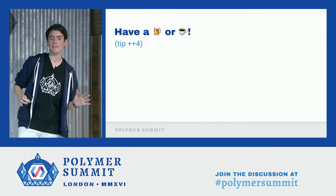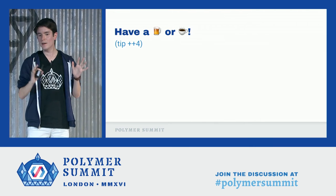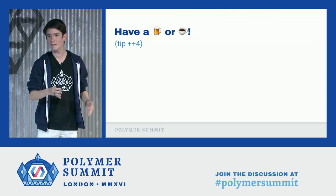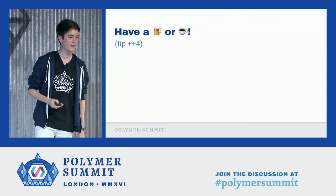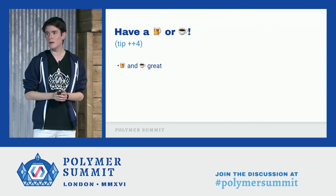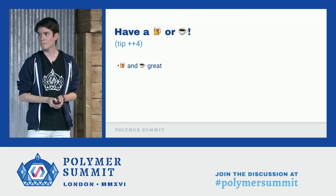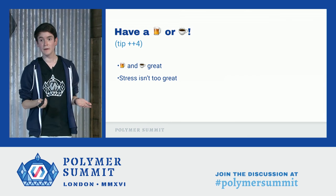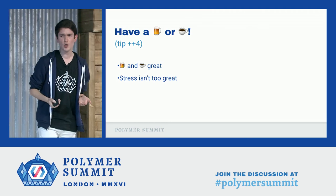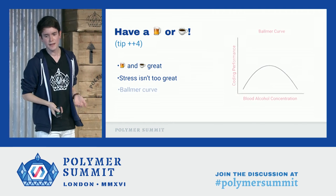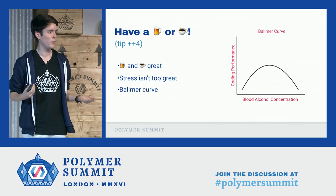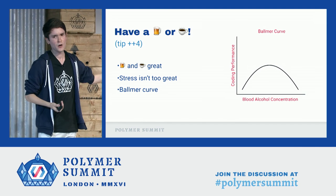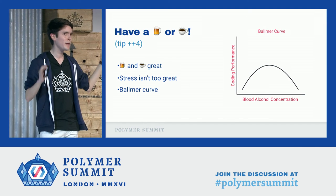Tip number five: step back, calm down, and grab yourself a beer or a coffee, whatever you love. Beer is great. Stress isn't so great. Have a beer. I hear there's this thing called science, and it created this thing called the Balmer curve. As you can see, with some alcohol in you, you become an amazing coder.